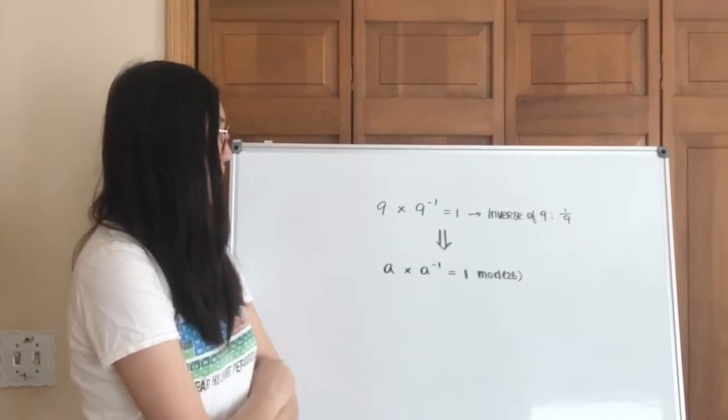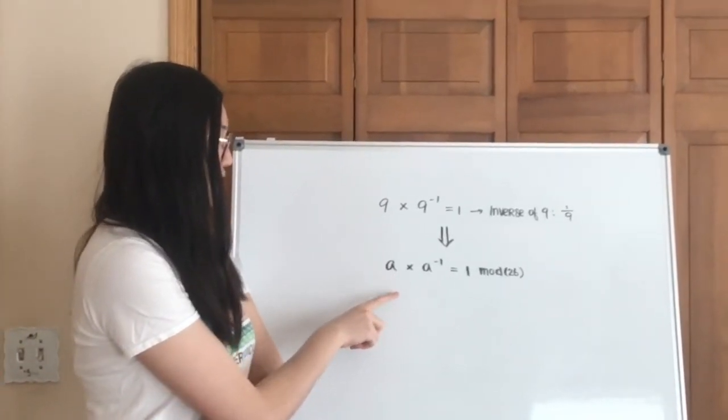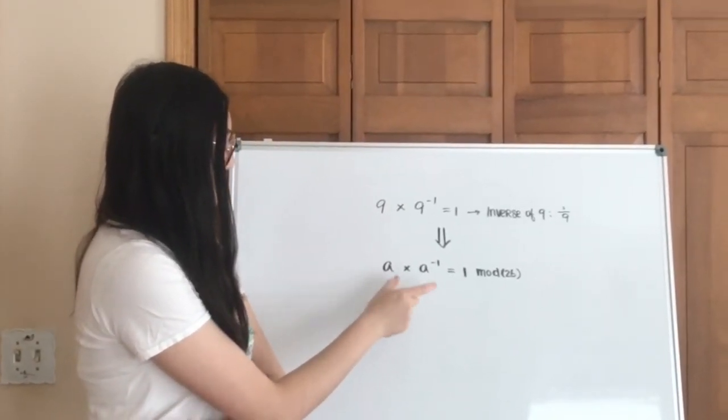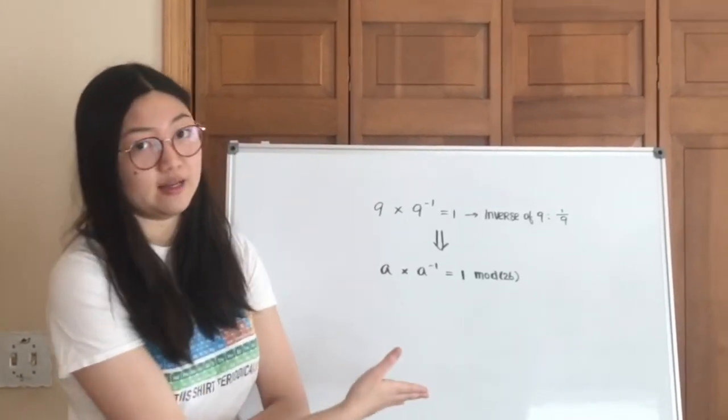So in the case of MOD26, this means that if you have a number a, then the inverse of the number a in MOD26 is whatever number, when multiplied by a, is going to give you an equivalent of 1 in MOD26.